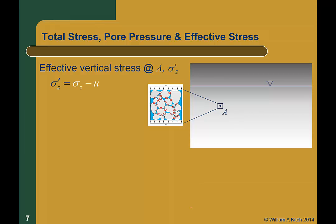Instead, we are going to define the vertical effective stress, sigma prime z, as the total stress, sigma z, minus the pore pressure, u. The effective stress, sigma prime z, is still that portion of the stress that is carried by the soil skeleton. But instead of defining the stress based on the area of the particle contacts, as we did with sigma prime c, we define it using the entire cross sectional area of the soil element. We do this because it makes the effective stress easy to compute, and it works. We will use the notation sigma prime to denote effective stresses, and sigma to denote total stress. The effective stress will always be the total stress minus the pore water pressure.